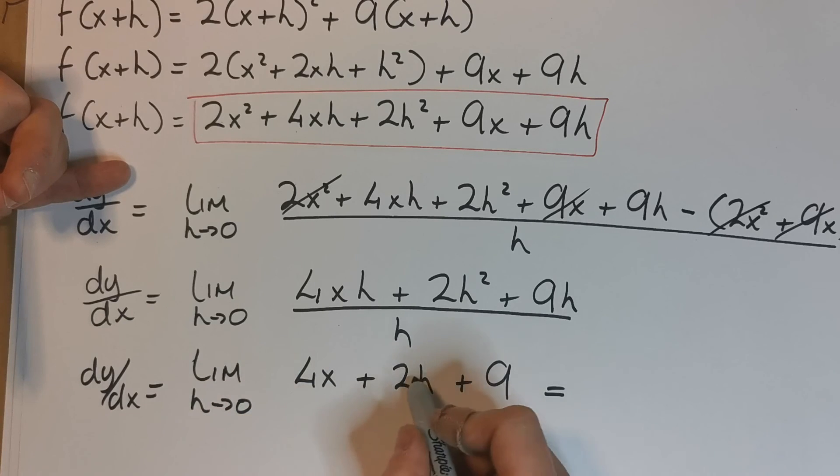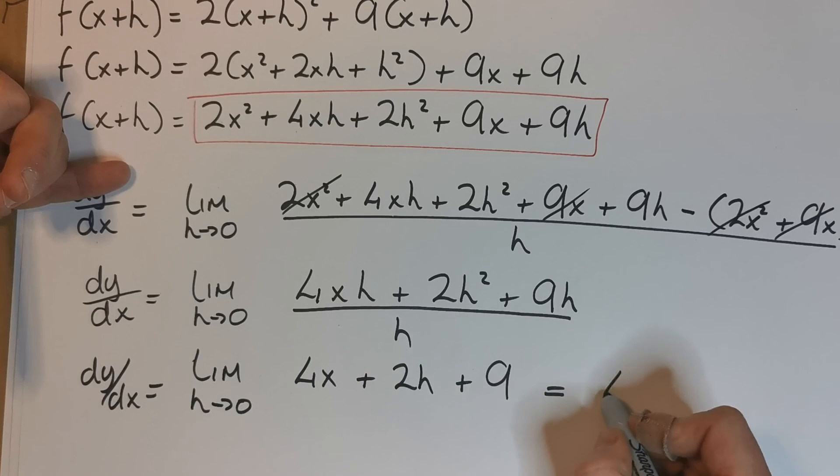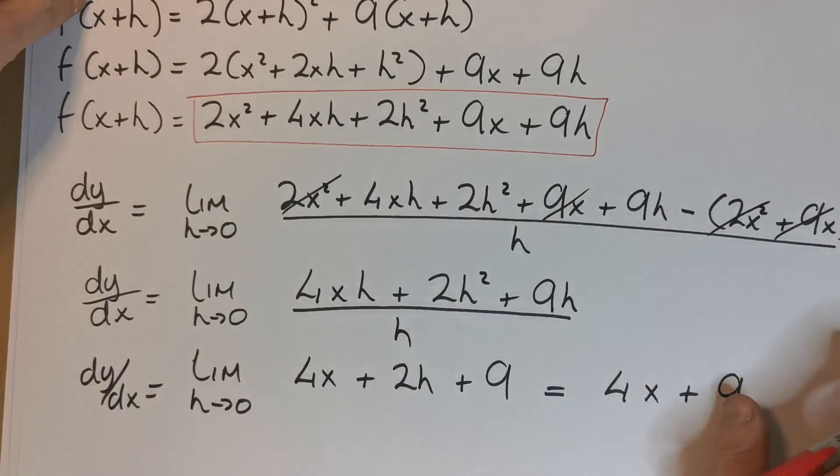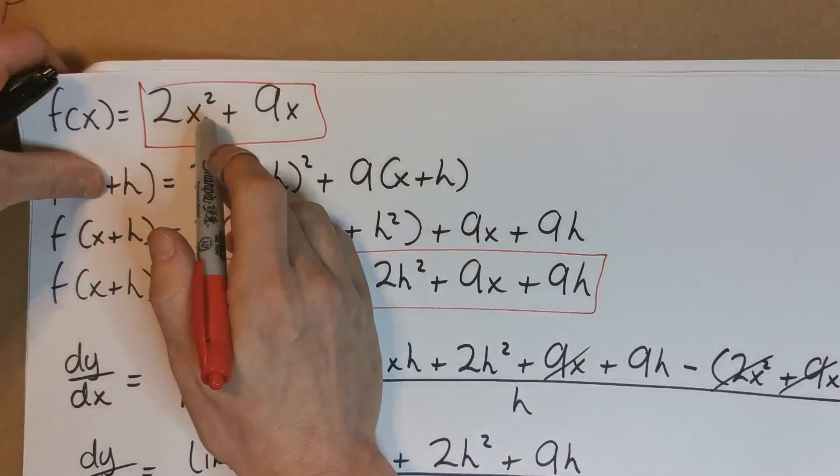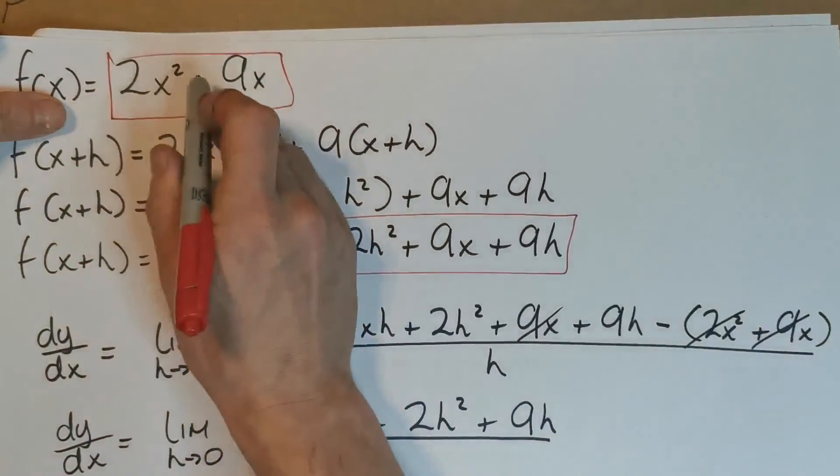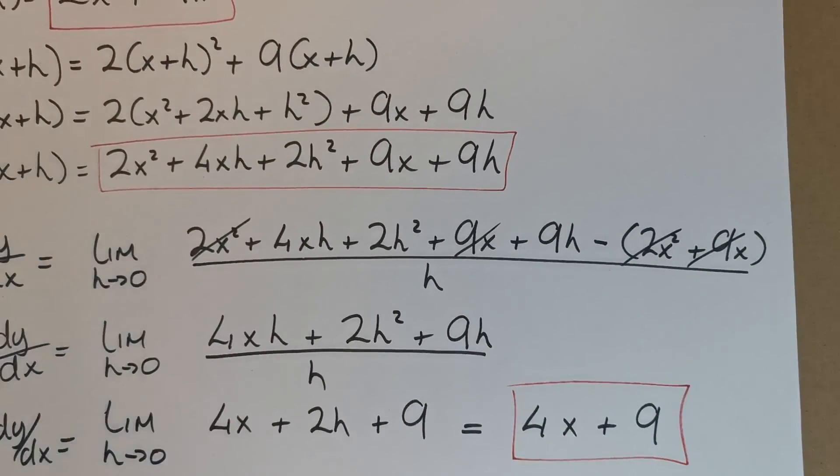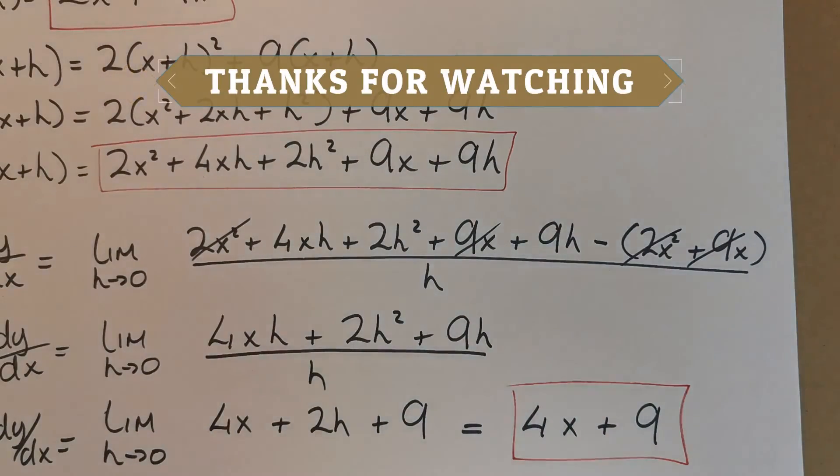Okay, now when I take the limit and I replace h by 0, this term will be gone and will just leave me with 4x + 9. And of course, we know by looking at the original derivative function that we had, that's what we should have had. We should have actually got 4x + 9. So yeah, differentiation from first principles. I might do a more difficult example in a later video.